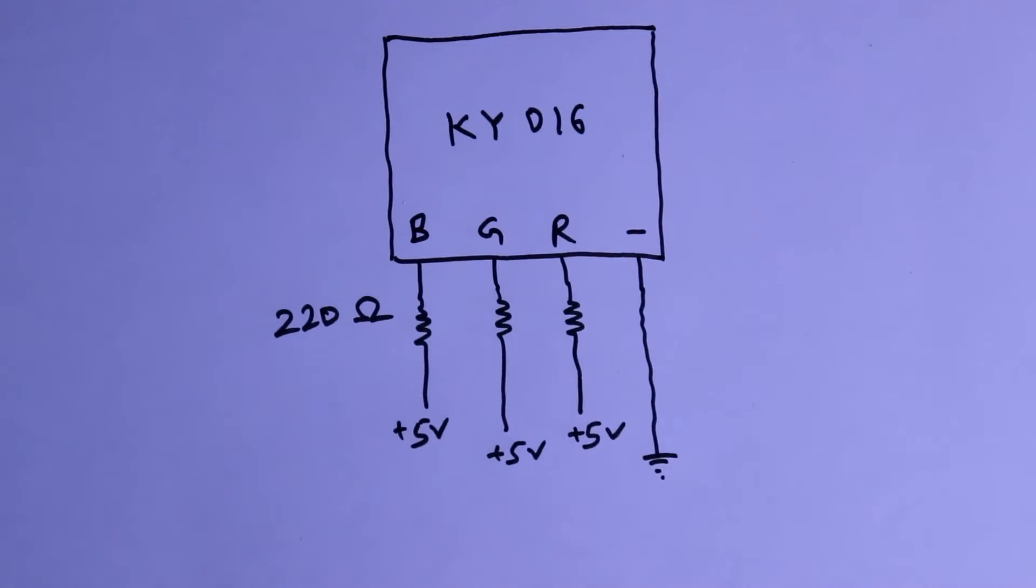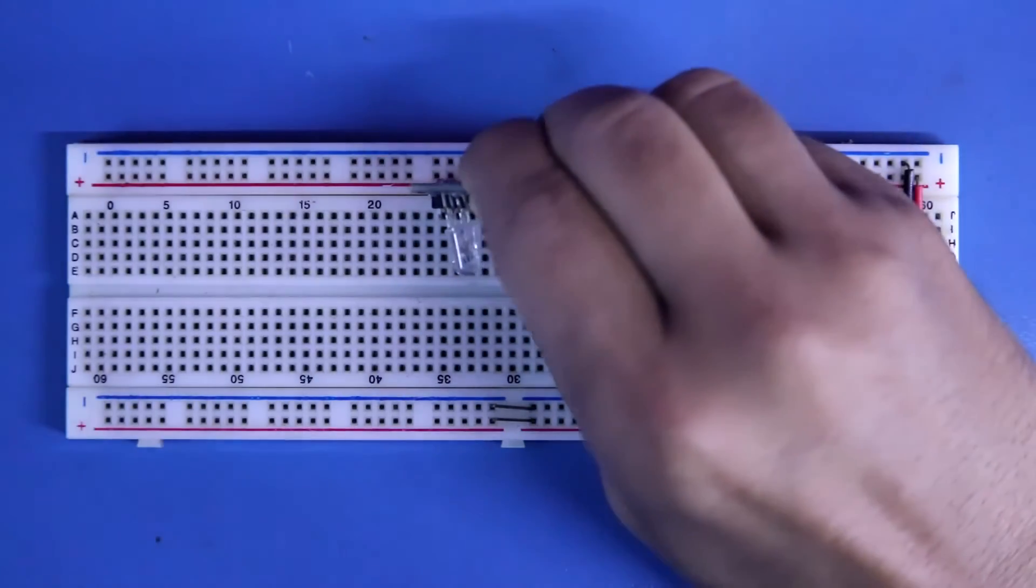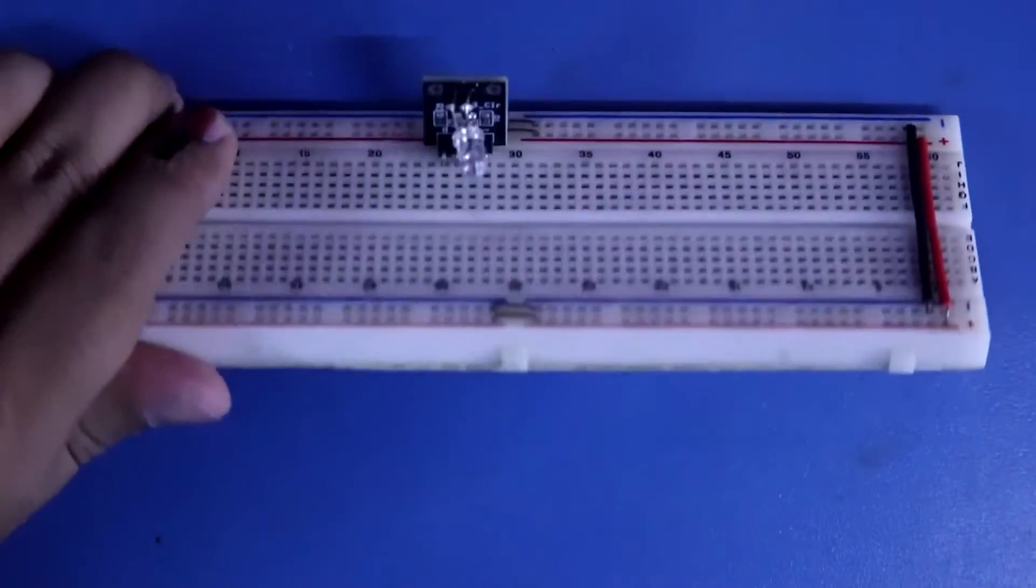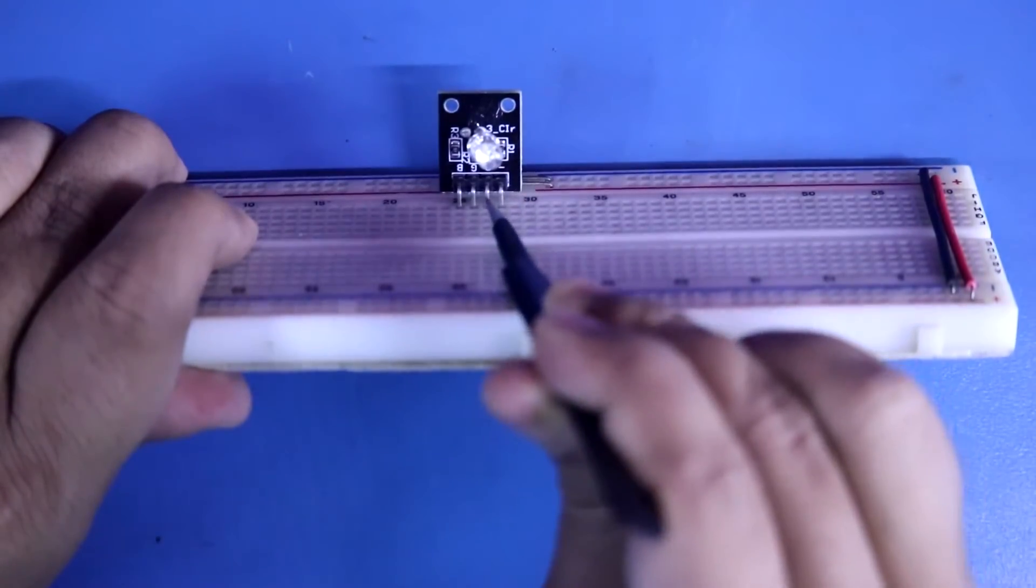For all 3. Now let's check it on breadboard. Putting the module: negative, R, G and B.